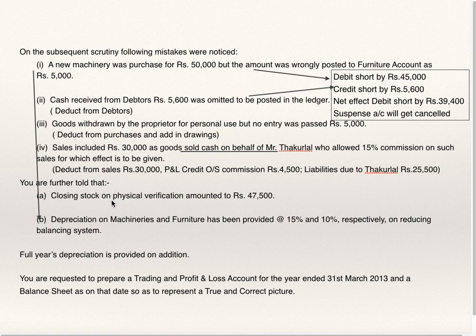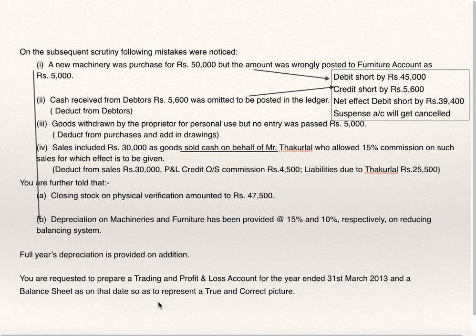Closing stock on physical verification amounted to 47,500. Closing stock is to be credited to the trading account and shown on the asset side of the balance sheet. Depreciation: full year's depreciation is provided on additions. You are requested to prepare trading and profit and loss account for the year ended 31st March 2013 and balance sheet as on that date. Find out gross profit, transfer it to profit and loss account, find out net profit, add it to capital, and check whether your balance sheet matches.